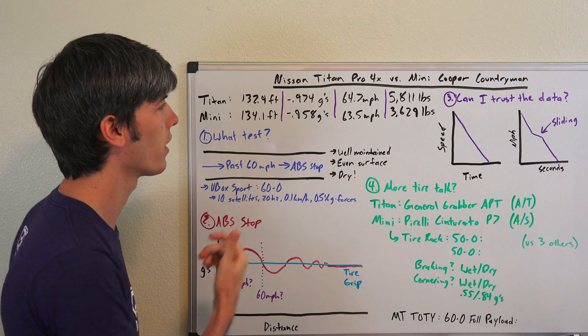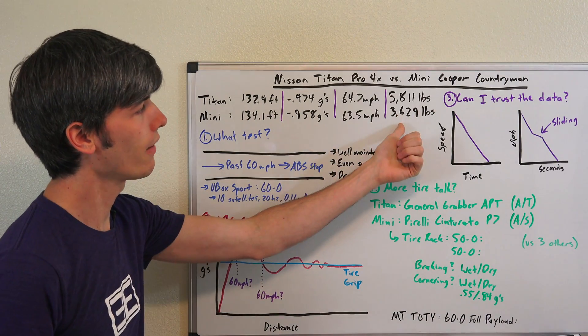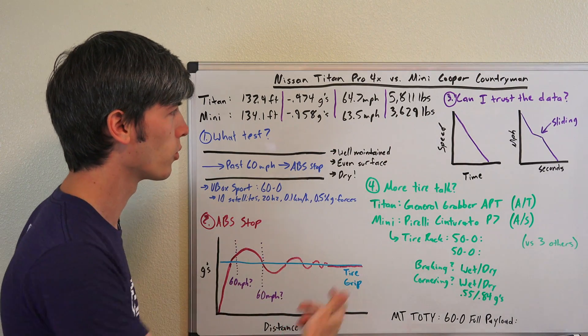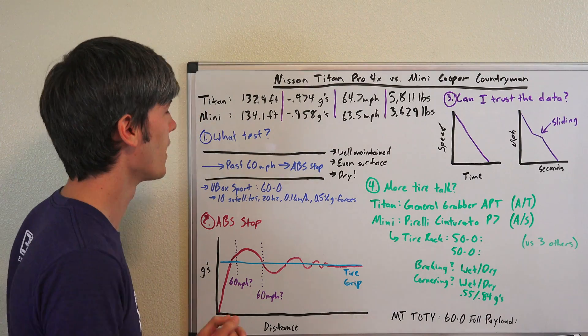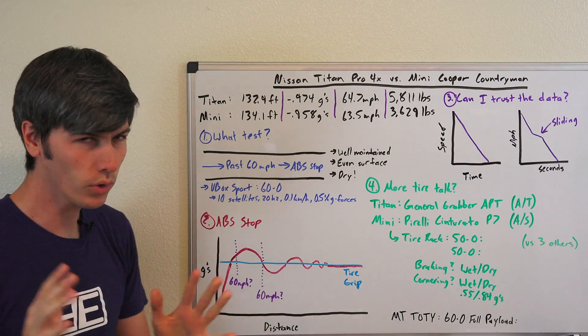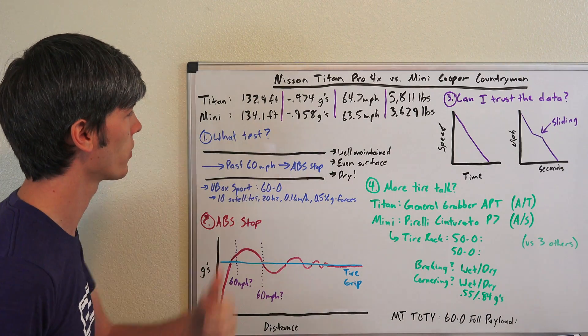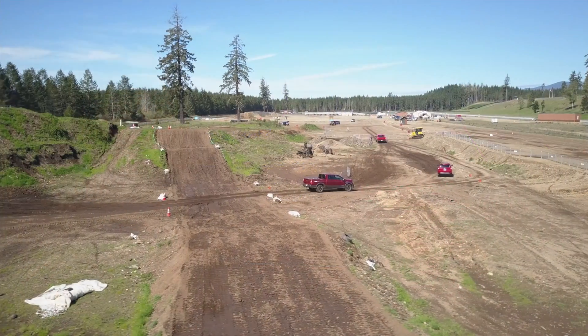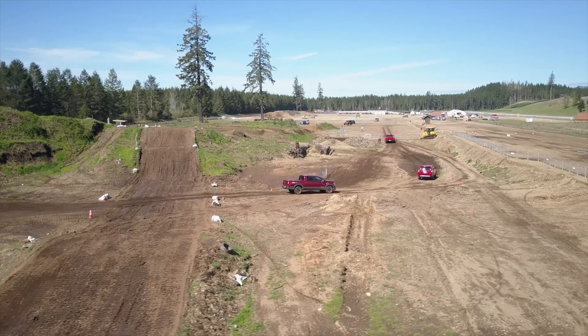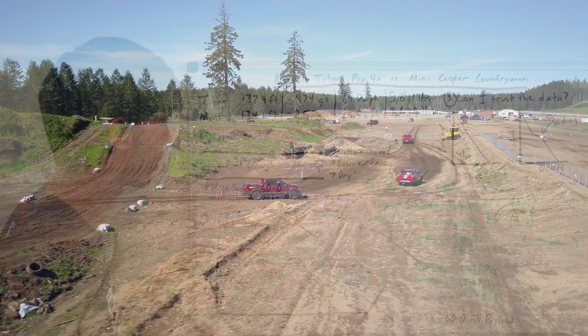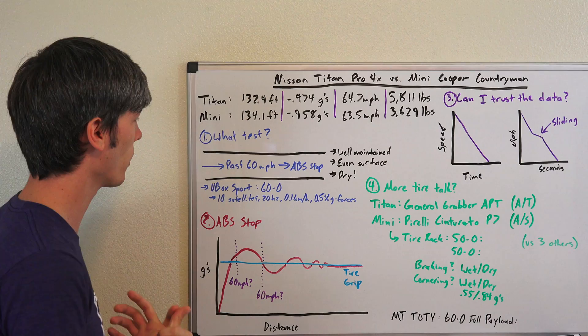A Mini Cooper weighing 3,629 pounds, heavy for a Mini Cooper yes, but still 2,000 some pounds lighter than the Nissan Titan. So we've got a lot of questions here. Can we trust this information, and if we can, how did that Nissan achieve such an incredible stopping distance?